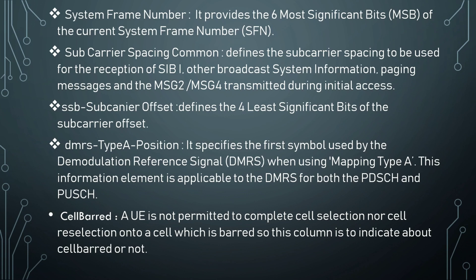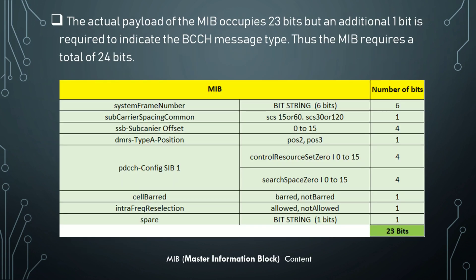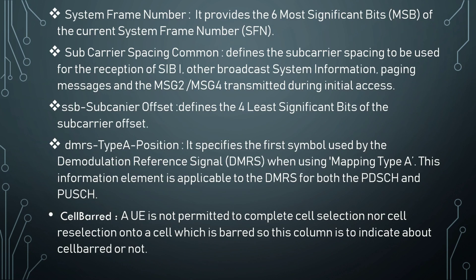System frame number provides the six most significant bits of the current system frame number. Subcarrier spacing common varies depending upon FR1 and FR2 — it defines the subcarrier spacing to be used for reception of SIB1 and other broadcast system information, paging messages, and message 2 and message 4 transmitted during initial access.